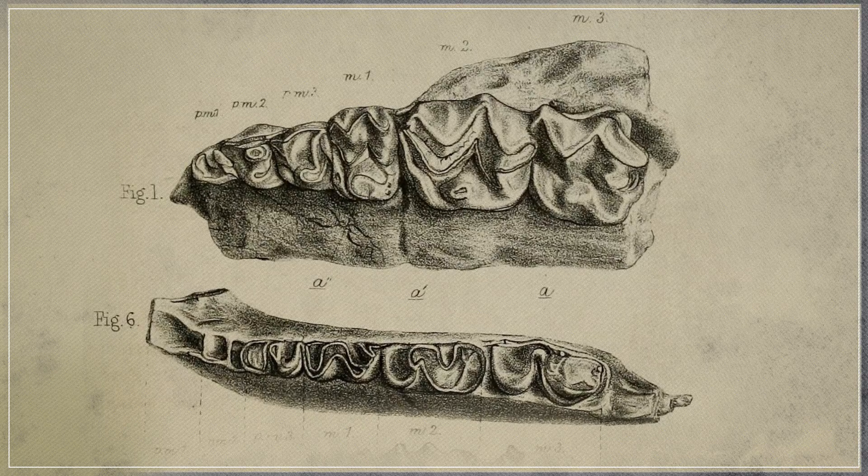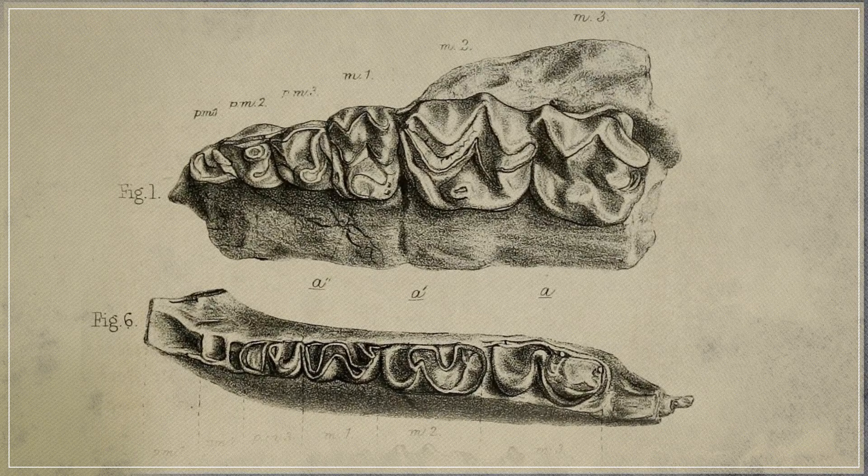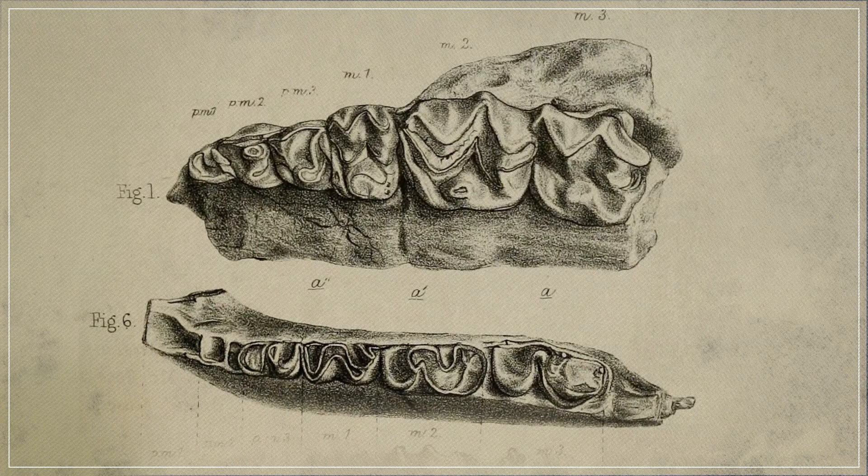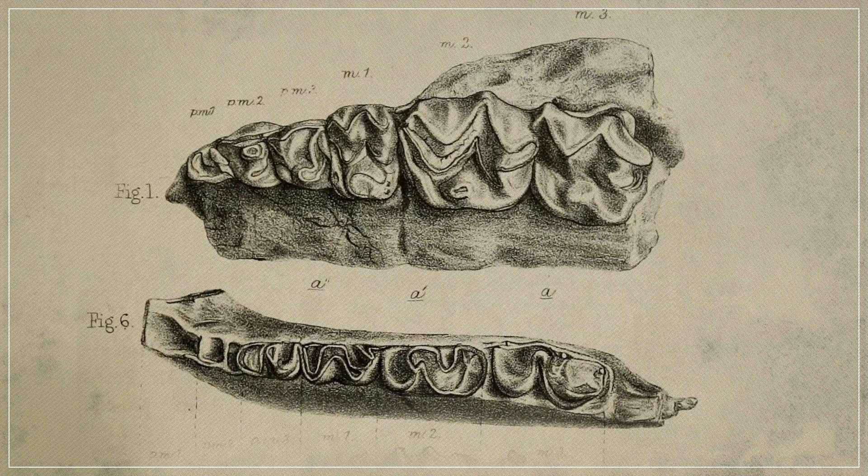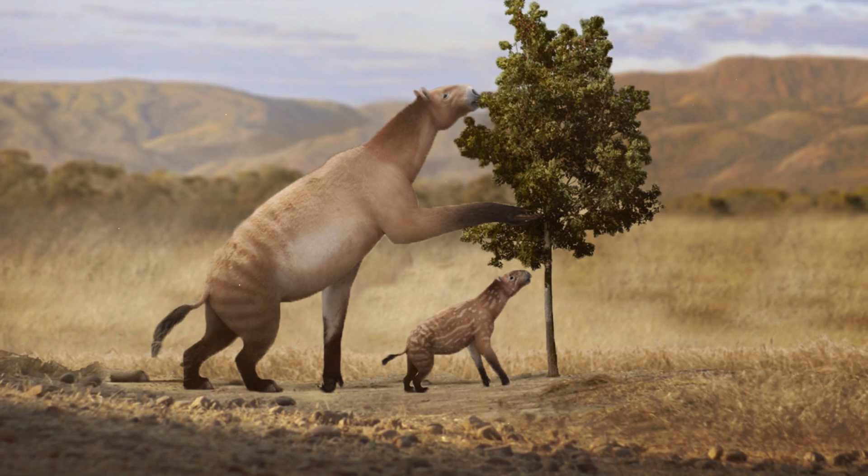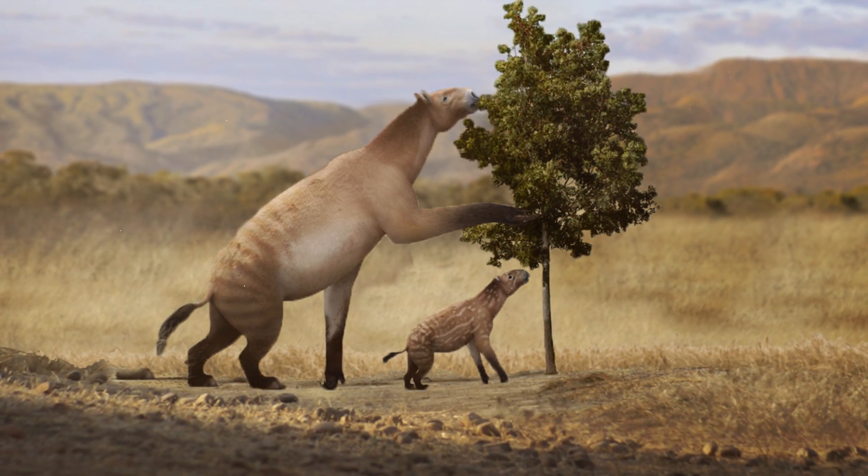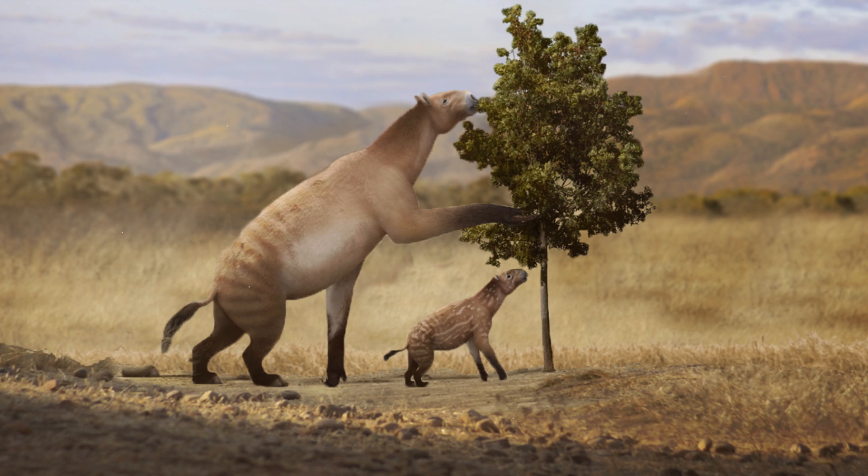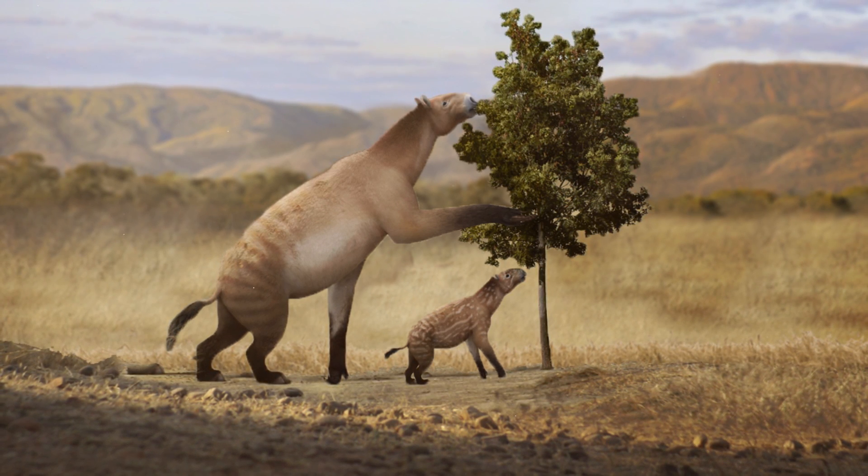But we know now that Chalicotheres were herbivores, because their teeth bear the distinct scratches and pits that come from eating leaves, bark, and twigs. So instead of using their claws for digging, these animals probably used them to get at the tastier leaves that were higher up in the trees, a type of eating preference called high browsing. The claws may also have helped Chalicotheres stand on their hind legs and brace themselves against tree trunks, making it easier to browse.